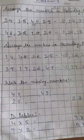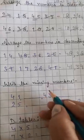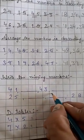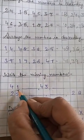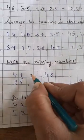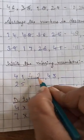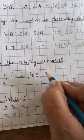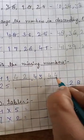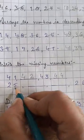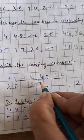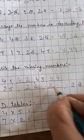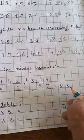Now write the missing numbers. Now, we have to complete these numbers. 41. What comes after 41? 42. 43. And then, 44. 25. Yes. 26. 27. And 28. Well done, my child.